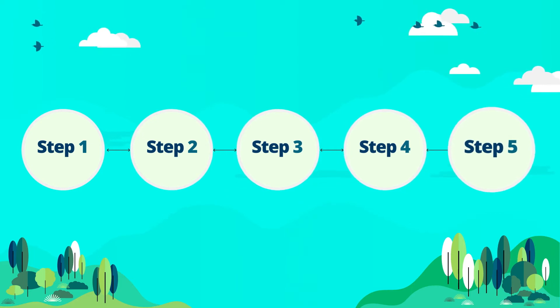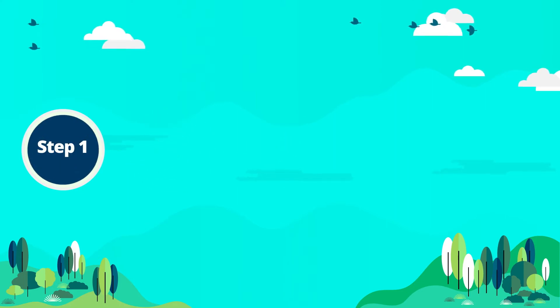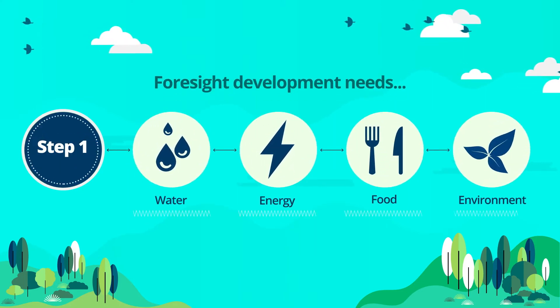The guide outlines a five-step process. Step 1 – Identify the water, energy, food and environmental needs for development.